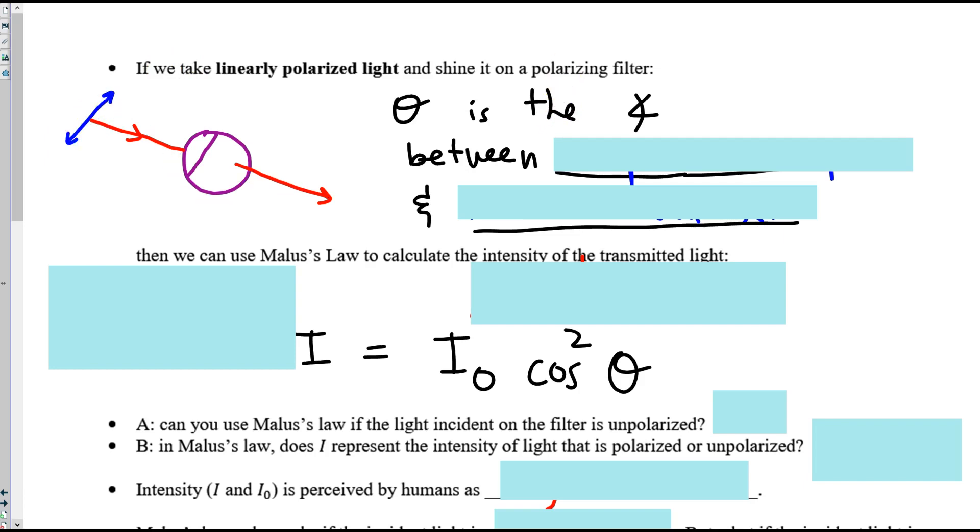But if we then take the filter and we rotate it. Now there is an angle between the polarization plane. There's some plane that the polarization is within. All of the light oscillates on that plane. And that plane is no longer aligned with the axis.